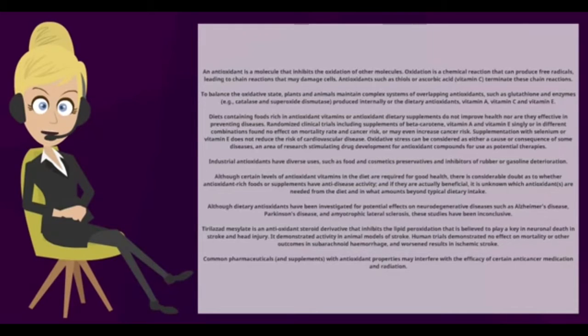Antioxidants such as thiols or ascorbic acid (vitamin C) terminate these chain reactions. To balance the oxidative state, plants and animals maintain complex systems of overlapping antioxidants such as glutathione and enzymes like catalase and superoxide dismutase, produced internally or from dietary antioxidants like vitamin A, vitamin C, and vitamin E.